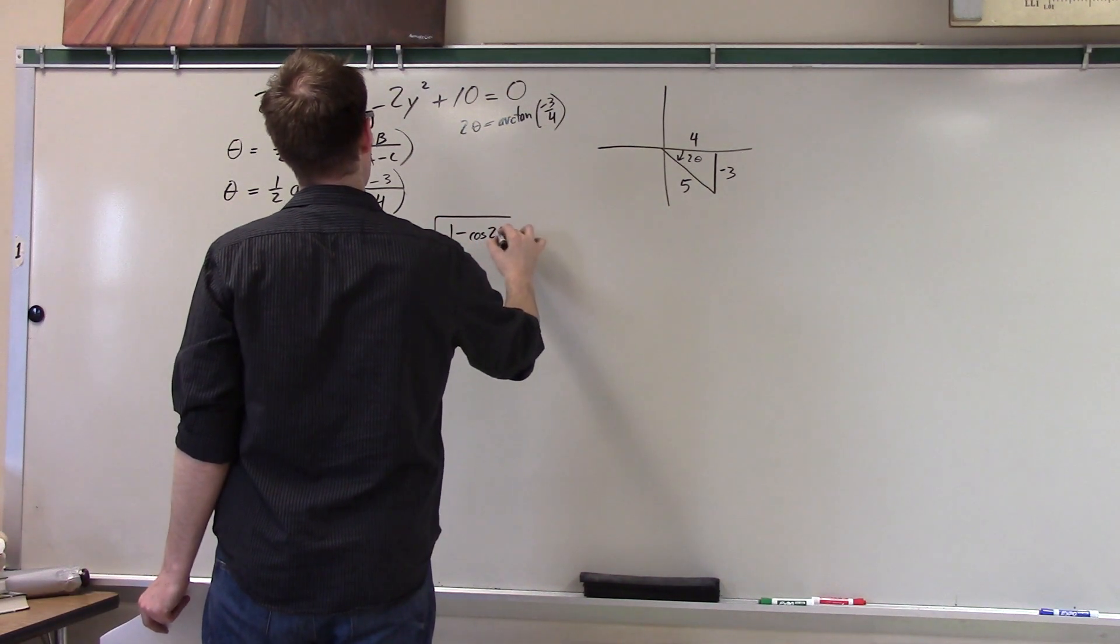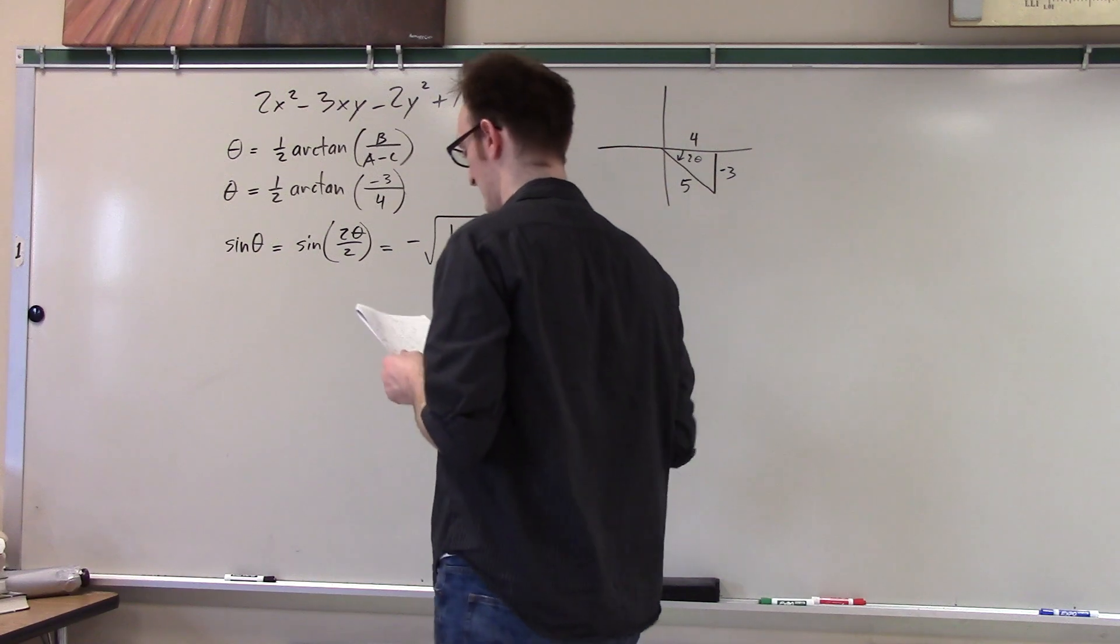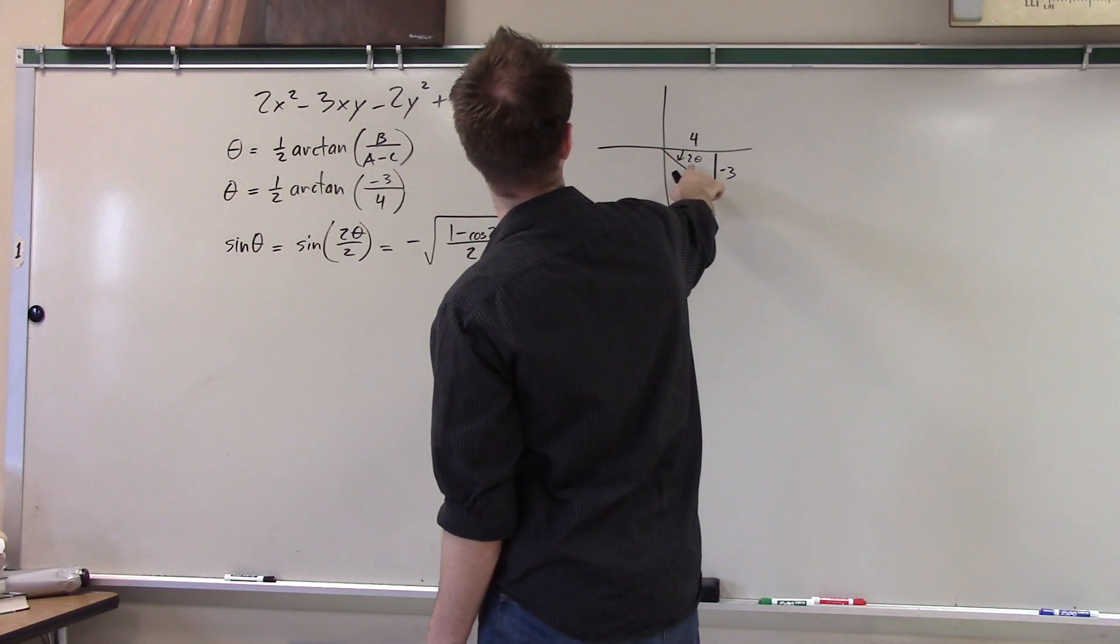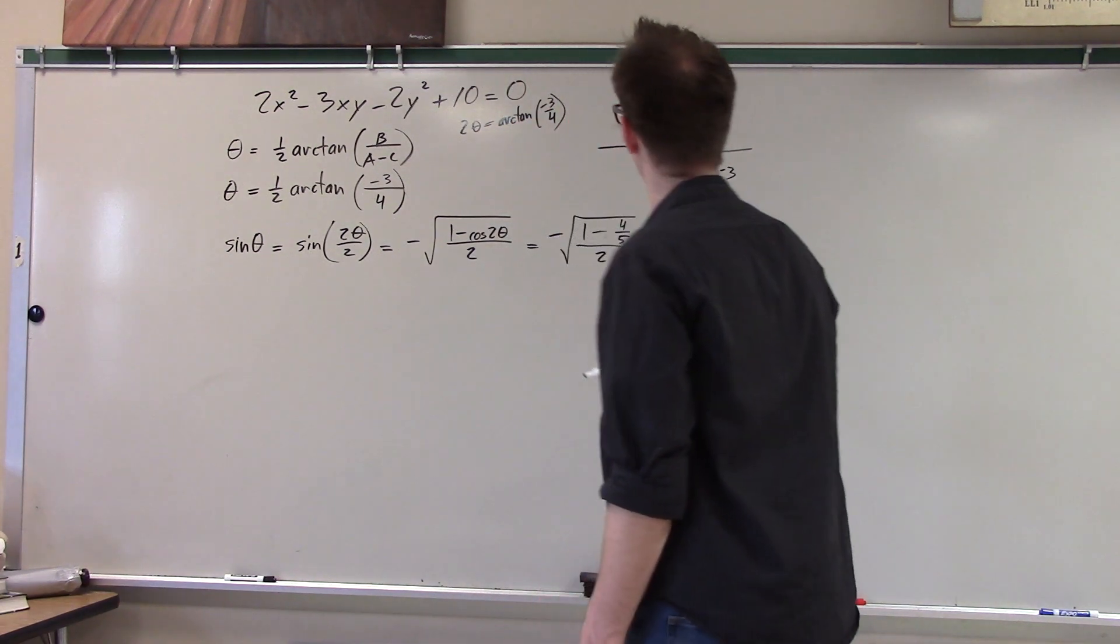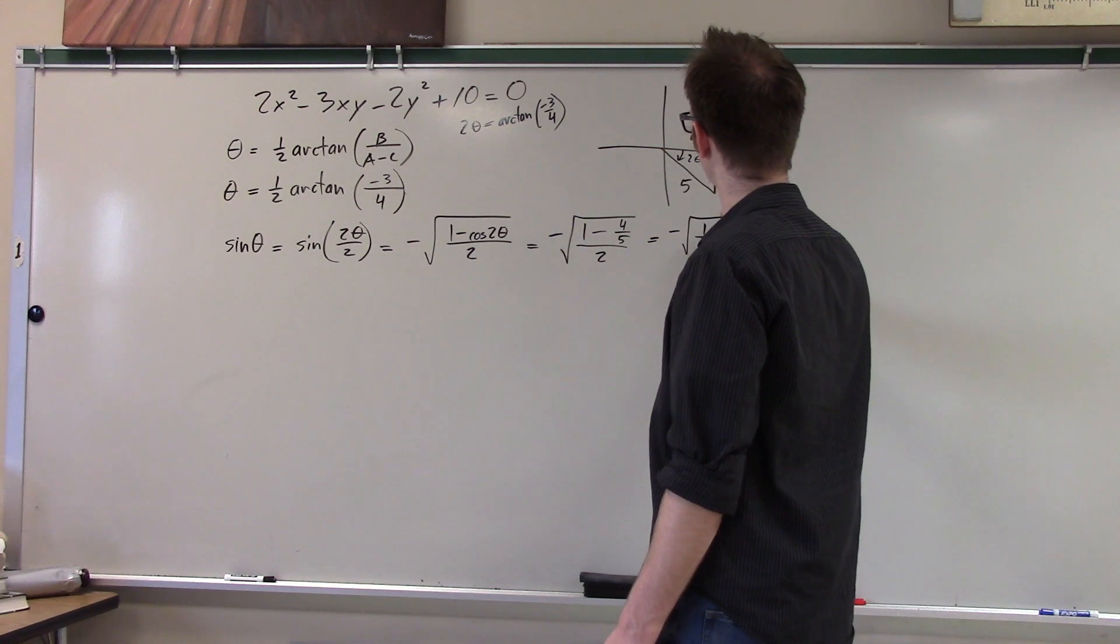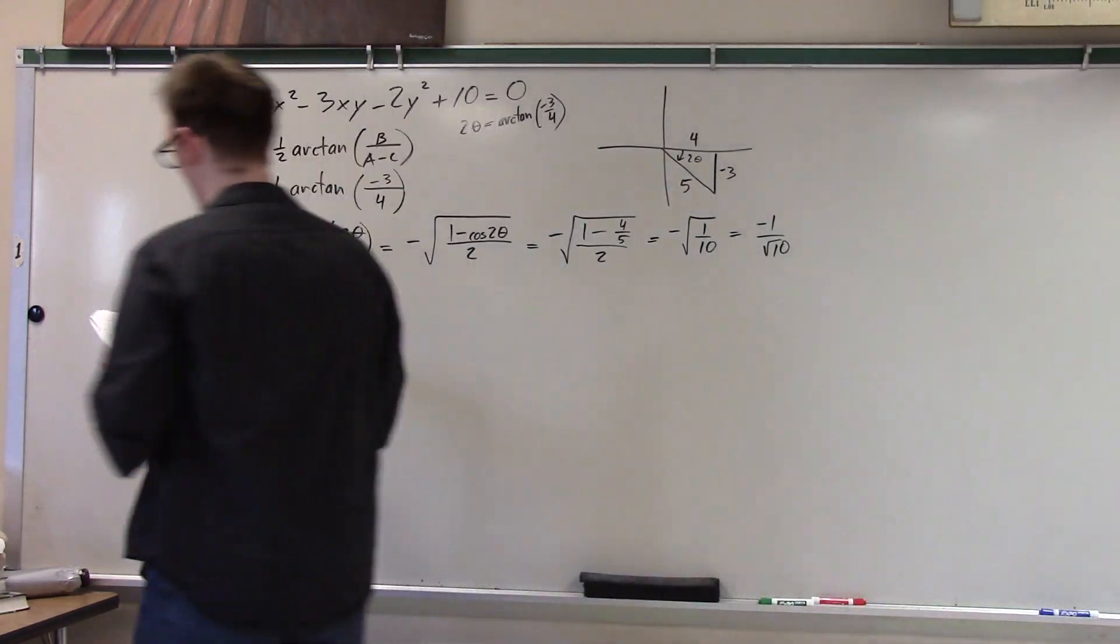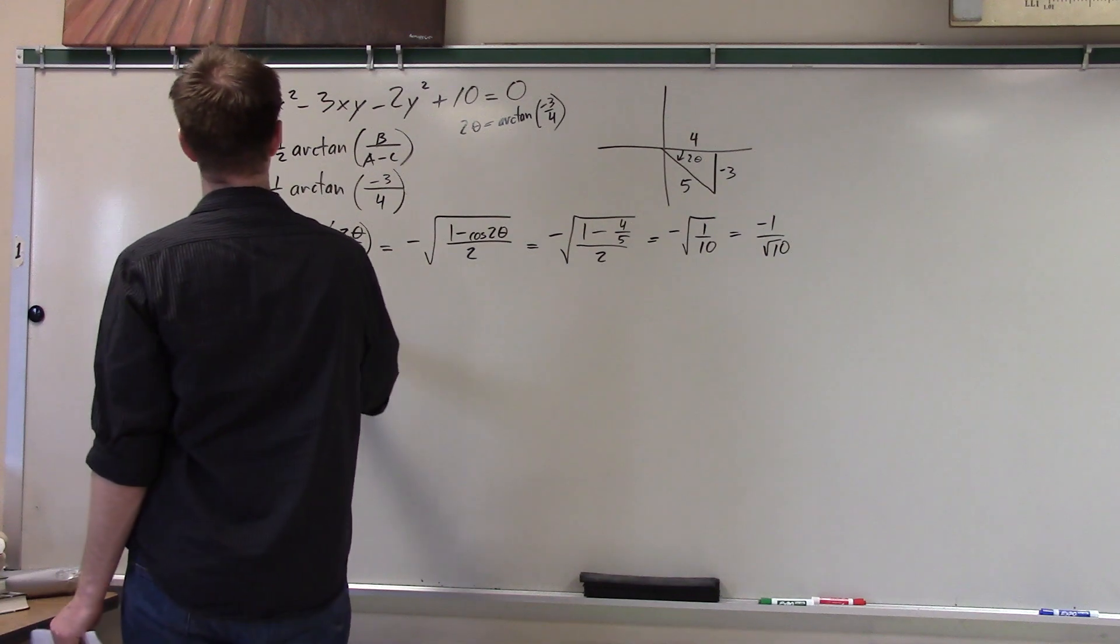Well there's a formula for this okay half angle formula says that it is going to be oh and we got to like go all the way back to like November with this right because there's that plus or minus crap but which is it going to be since since two theta is arc tan negative three fourths it's negative so the sine is going to be the negative one so this is going to be negative root one minus cosine two theta over two that's just the half angle formula you need to like know that.